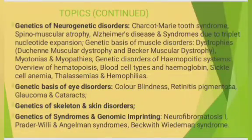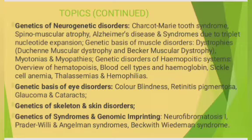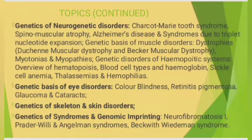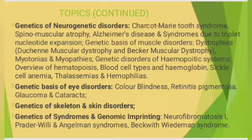The next topic is genetics of neurogenetic disorders, including Tay-Sachs syndrome, spinal muscular atrophy, Alzheimer's disease, syndromes due to trinucleotide repeat expansion, and the genetic basis of muscular disorders such as Duchenne muscular dystrophy and Becker muscular dystrophy, as well as myotonias and myopathies.